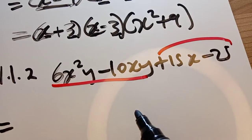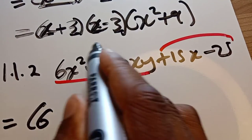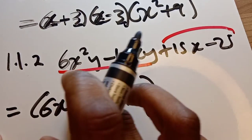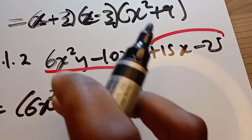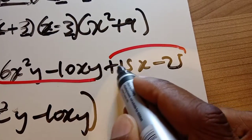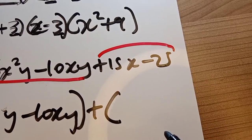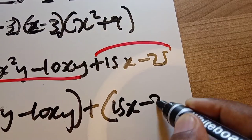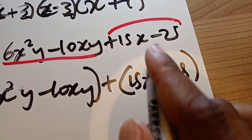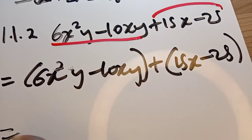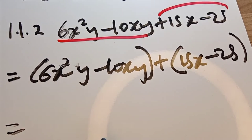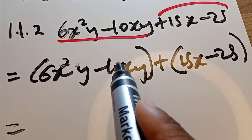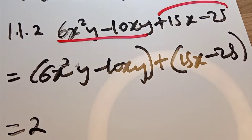We group the first ones together and the last ones together to see what we get. When we group them, we take each pair into a bracket. We take the first pair into a bracket and the second pair into a bracket, separating them with addition and keeping all their signs. Here we have positive 15 and negative 25. Checking the first bracket: 6 and 10 are both divisible by 2.